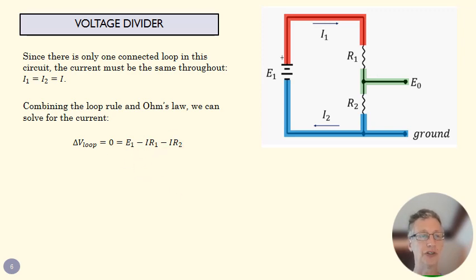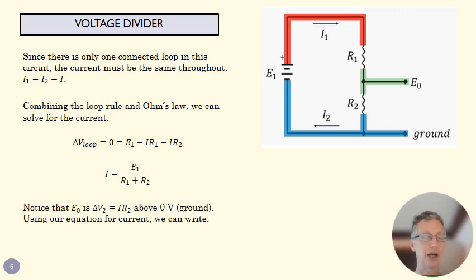That's going to equal zero when we sum them all together. I can rearrange that equation to find a relationship between my current and my energy source and my energy voltage.